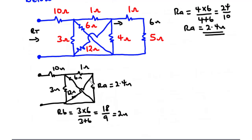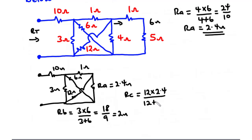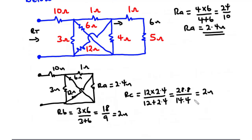Focusing on the next loop, Re and the 12-ohm resistor are connected in parallel. Let Rc be their combined resistance: 12 times 2.4 divided by 12 plus 2.4 equals 28.8 over 14.4, which equals 2 ohms. So Rc equals 2 ohms.